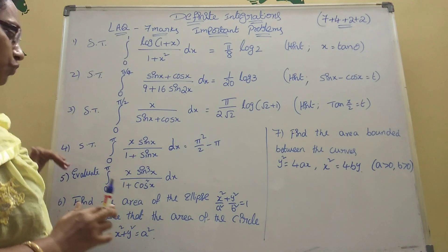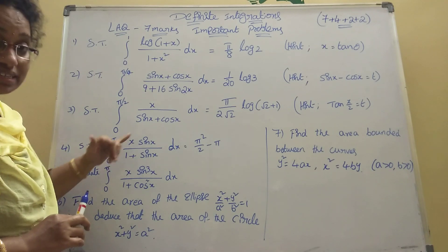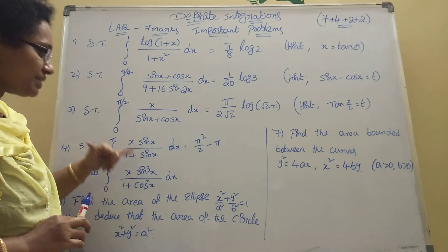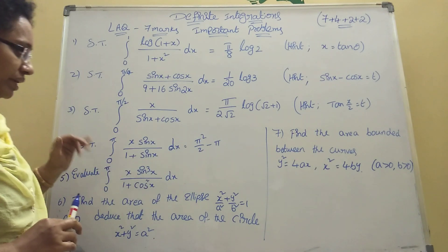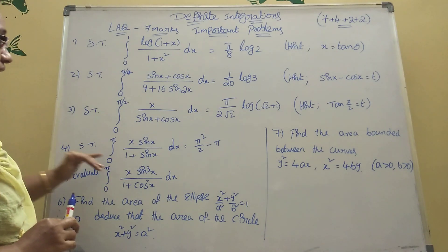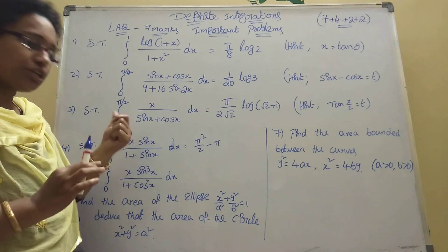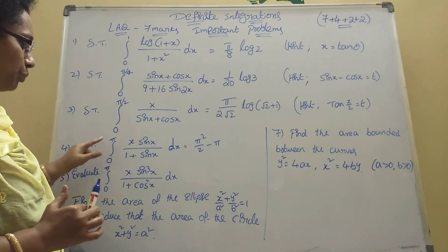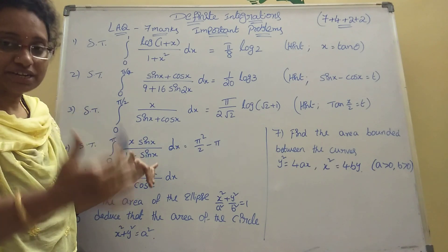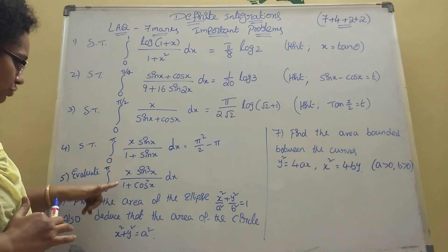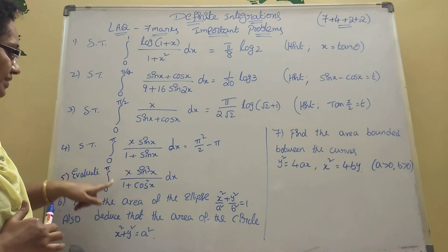Fourth one: integration from zero to π of x sin x divided by (1 + sin x) dx equals π²/2 − π. The hint here is: apply the zero to a minus x formula, then do rationalizing — you will get the value easily. Also, yesterday I posted the sum with x sin³x divided by (1 + cos²x) dx — must see that video.